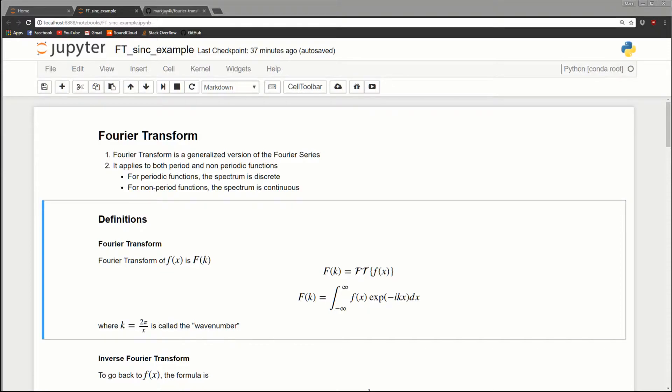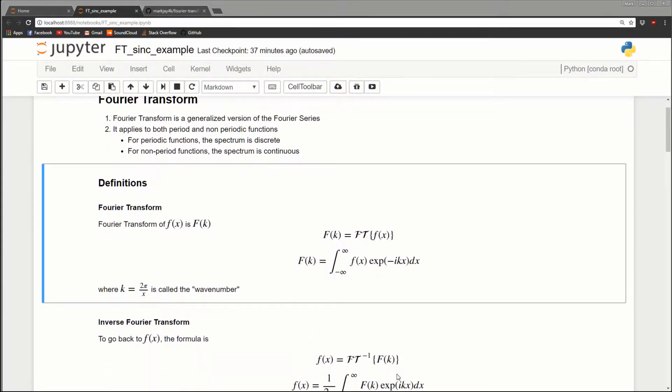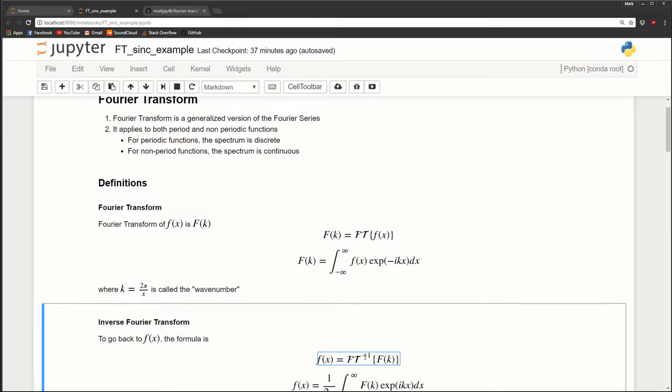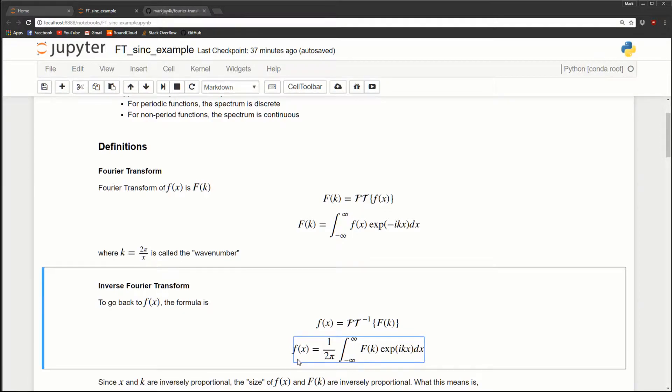If we want to go back from F(k) to f(x), we use the inverse Fourier transform. We write that as f(x) equals fancy FT to the minus 1 of F(k), which means take the inverse Fourier transform of F(k). Mathematically the definition is f(x) equals one over 2π times the integral from minus infinity to positive infinity of F(k) times e to the ikx dx. You'll see a lot of similarity between the Fourier transform and its inverse. The key differences are in the transform it's minus i and in the inverse transform it's positive i, and we also have this one over 2π out front.